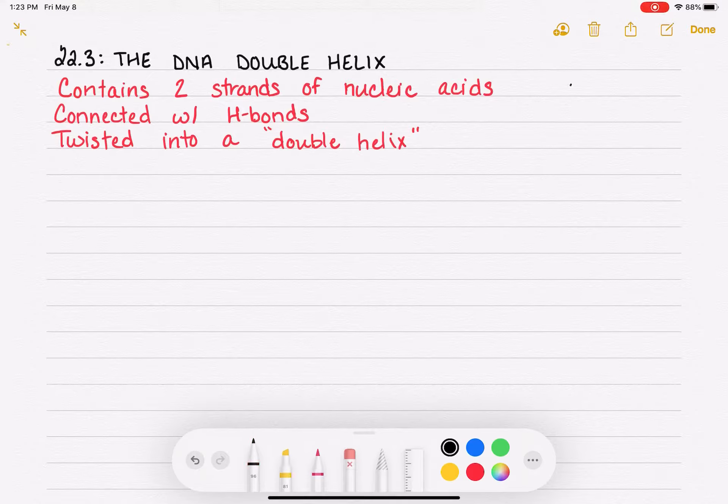We specifically call this a double helix because both of the strands of nucleic acids are twisted into a helix. So you have one strand of nucleic acid that's twisted into the helix, and then you have the second strand next to it that's also twisted into its own helix.